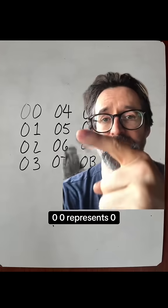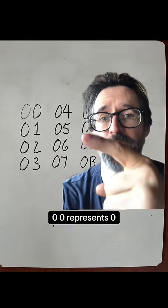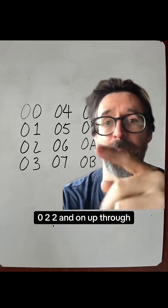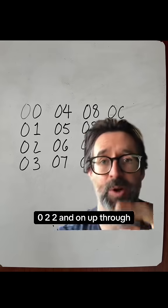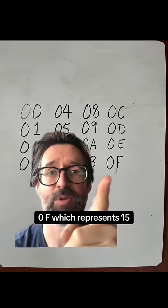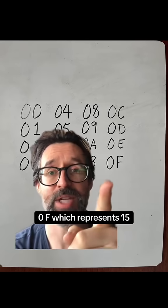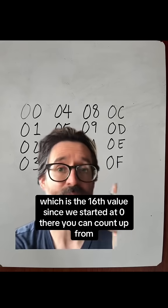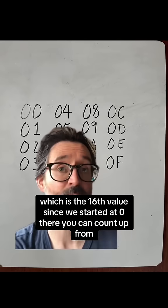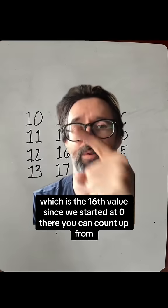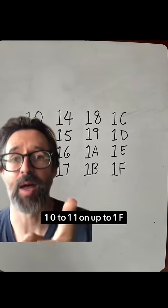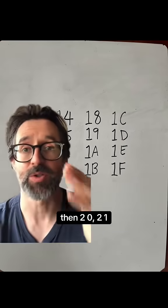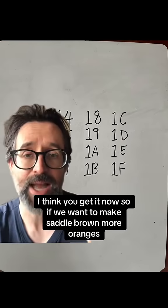00 represents 0, 01 represents 1, 02 represents 2, and on up through 0F, which represents 15 — the 16th value since we started at 0. From there, you can count up from 10 to 11, on up to 1F, then 20, 21 — and so on.